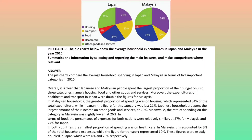The expenditures on health care and transport in Japan were double the figures for Malaysia. In Malaysian households, the greatest proportion of spending was on housing, which represented 34% of the total expenditure, while in Japan the figure for this category was just 21%. Japanese householders spent the largest amount of their income on other goods and services at 29%, while the rate of spending on this category in Malaysia was slightly lower at 26%. In terms of food, the percentages of expenses for both nations were relatively similar, at 27% for Malaysia and 24% for Japan.